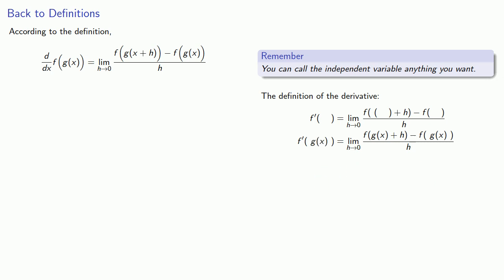So again, we can call the independent variable anything we want. We traditionally use h for our derivatives, but there's a possibility of some confusion, because the h here is different from the h here. So instead of calling this h, we'll call it k.